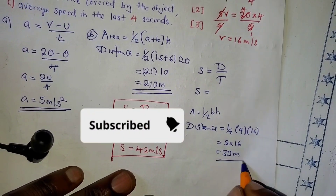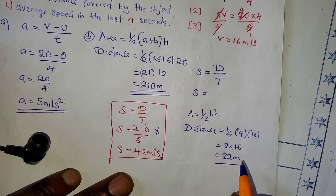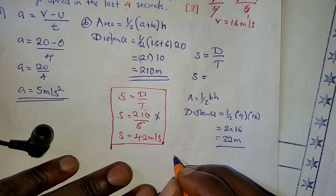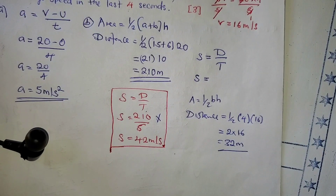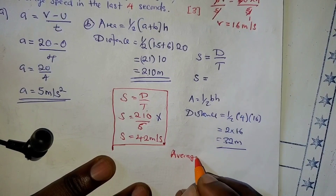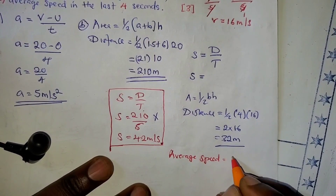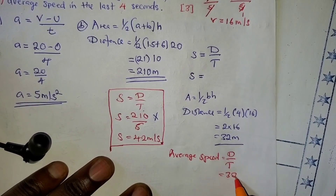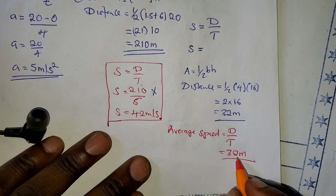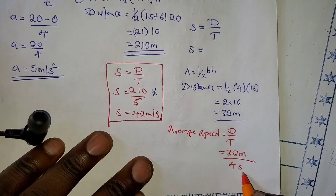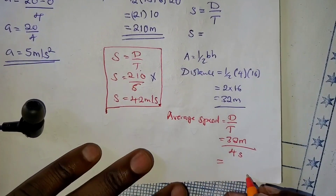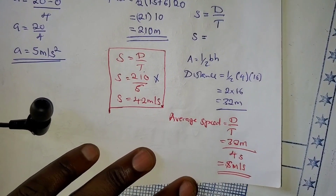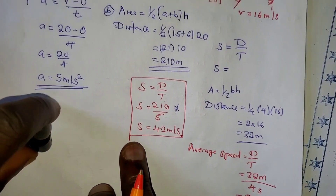Having found the distance covered in the last four seconds and the time taken, we can now find the average speed. Average speed = distance ÷ time = 32 meters ÷ 4 seconds = 8 meters per second.